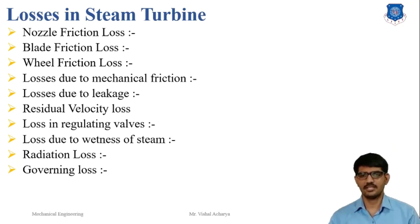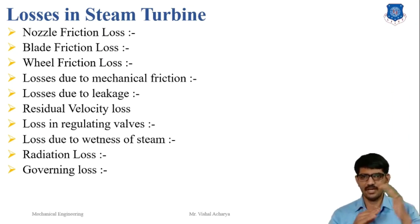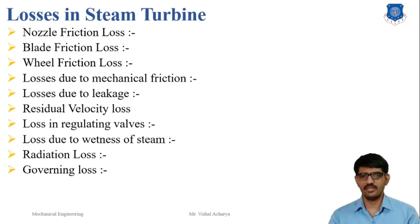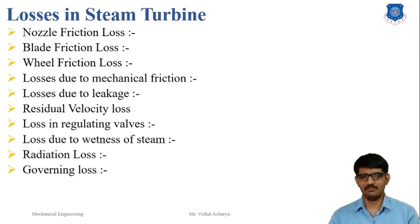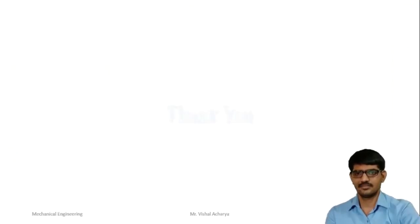Ninth is the radiation loss. This loss mainly takes place due to the temperature difference between the turbine casing and its surrounding atmosphere. This loss can be minimized by heavily insulating the turbine casing, and it occurs in both impulse and reaction turbines. Tenth is the governing loss. This loss occurs in both impulse and reaction turbines and is due to the control of steam at the main stop valve by the governor. Thank you.